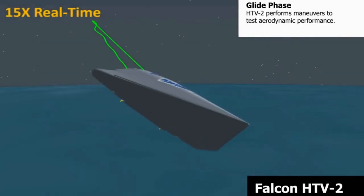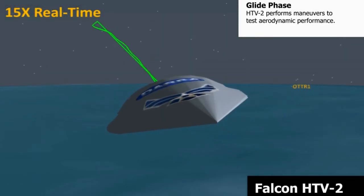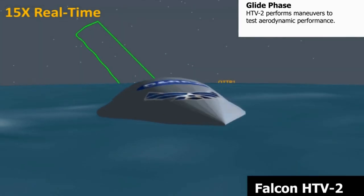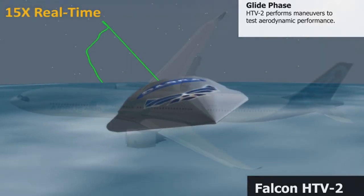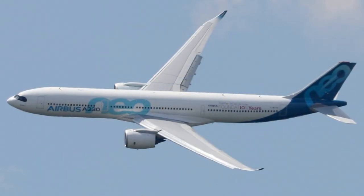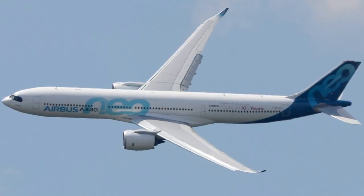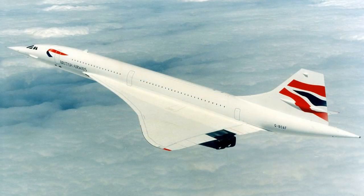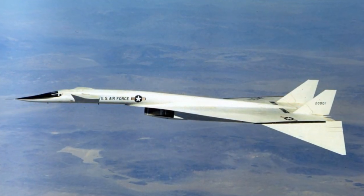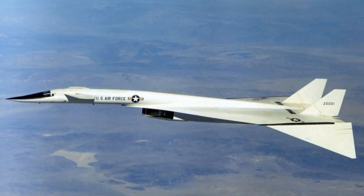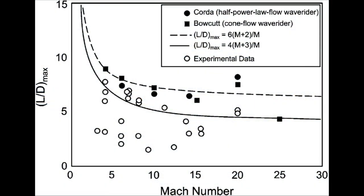As you might expect, this additional form of drag lowers the aerodynamic performance of supersonic vehicles with respect to subsonic vehicles. A commercial passenger plane typically has a cruising lift-to-drag ratio in the range of 15-20, while supersonic aircraft such as the Concorde and the XB-70 Valkyrie had supersonic cruising lift-to-drag ratios of around 6-7. In general, as the Mach number is increased, the maximum possible lift-to-drag ratio decreases.